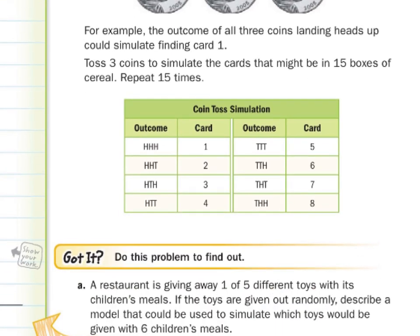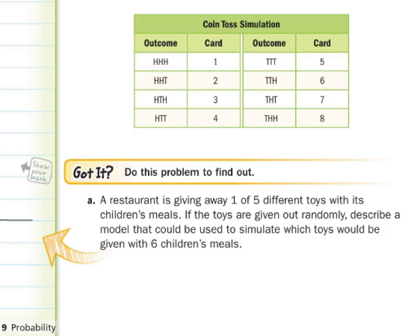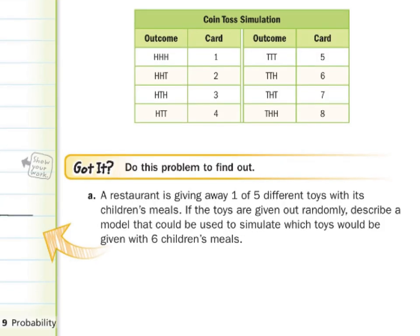What about our got it question? A restaurant is giving away one of five different toys with its children meals. If the toys are given out randomly, describe a model that could be used to simulate which toys would be given with six children's meals. Well, unlike our eight trading cards, we don't have an easy way for five.